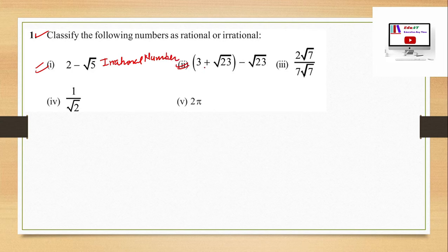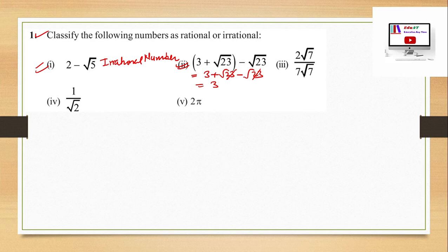Second part: we can simplify it. It is (3 + root 23) minus root 23. So root 23 minus root 23 — the irrational numbers cancel each other. It becomes 3, and 3 is a rational number. So this number will be a rational number.